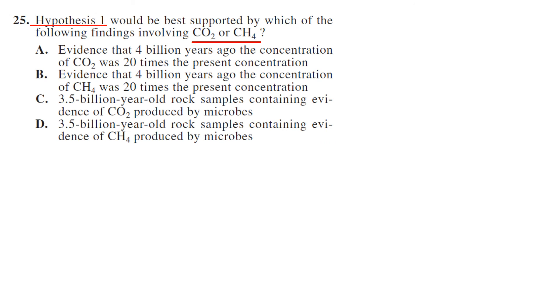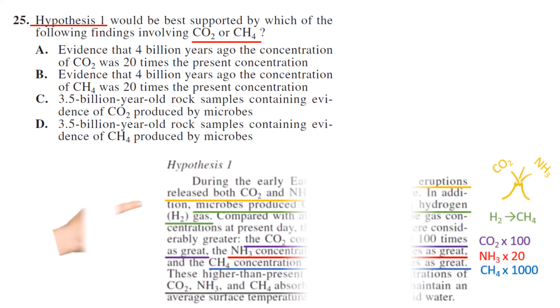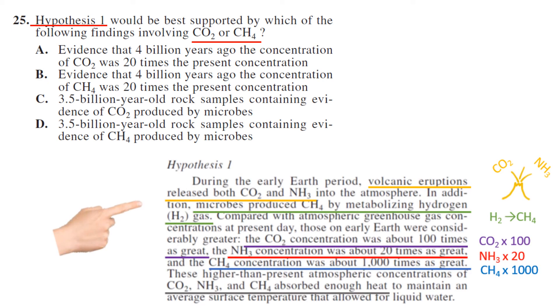Hypothesis one would be best supported by which of the following findings of CO2 and CH4? So we're looking at hypothesis one. Let's break down the choices. Answer A said CO2 is 20 times - nope, that's 100 times more, so not A. CH4 was 20 times - no, CH4, that's 1000 times, so that's wrong. And then these last two are both looking at CO2 produced by microbes or CH4 produced by microbes, and it's CH4, so your answer is D.